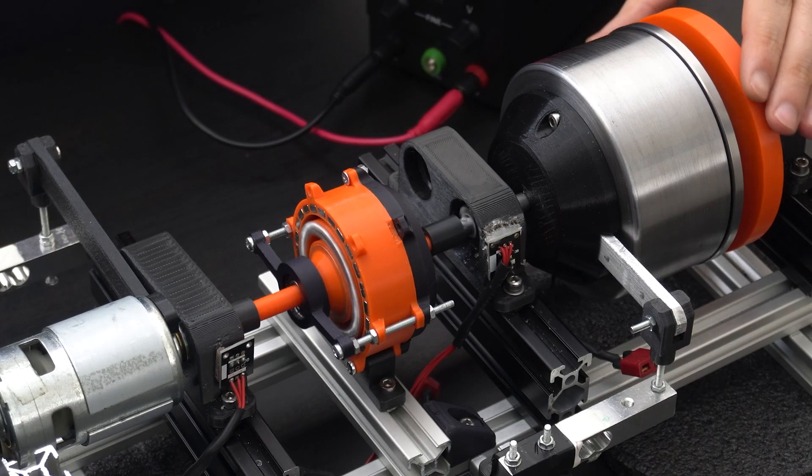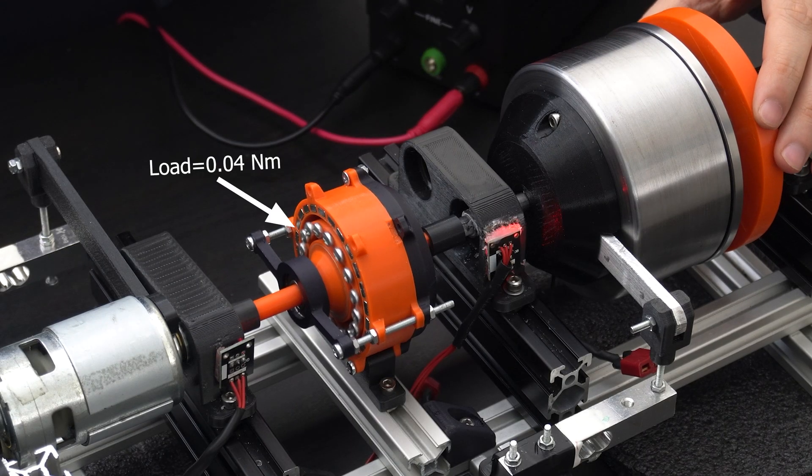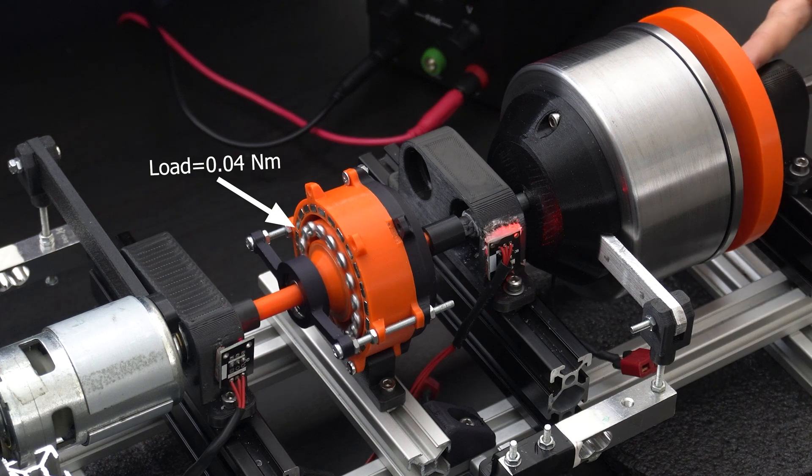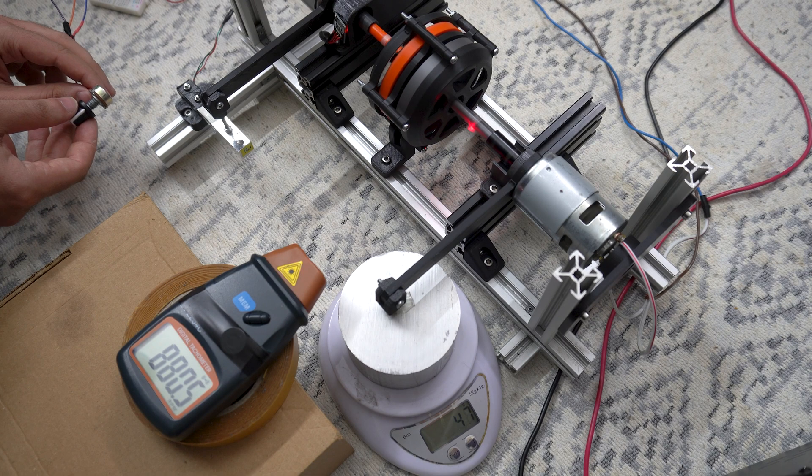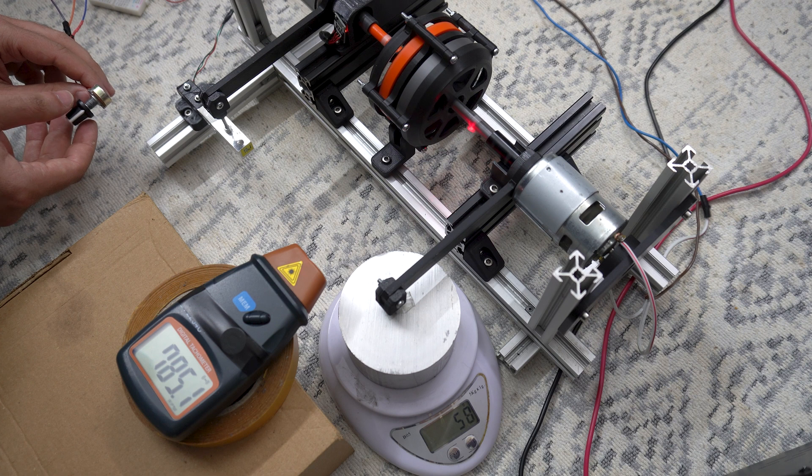And also, the low efficiency of radial flux one might be due to the low applied load. So I also tested this gearbox under variable loads to see this clearly. And the results proved what I was saying.